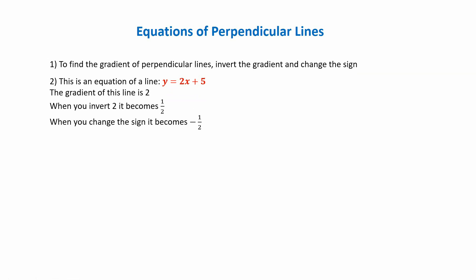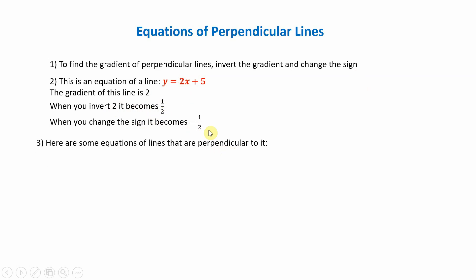We've got an example here of an equation for a line: y equals 2x plus 5. From that equation, the 2 is the gradient. So we change the gradient by inverting it to become a half, and changing the sign from plus to minus. Here are some of the equations for lines that are perpendicular to this one — they all begin with minus a half x.